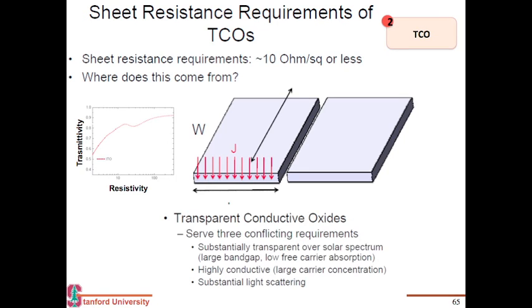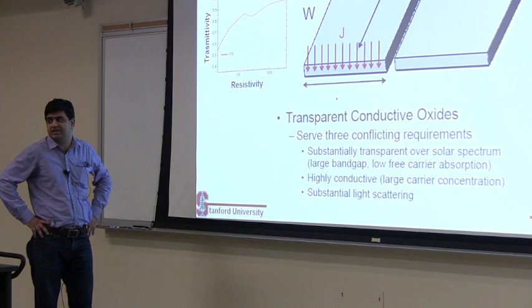So the last thing I want to cover is the contacts, and these are called TCOs. That stands for transparent conducting oxide. So the way you make these transparent electrodes is using these metal oxides, either zinc oxide or tin oxide or indium tin oxide.